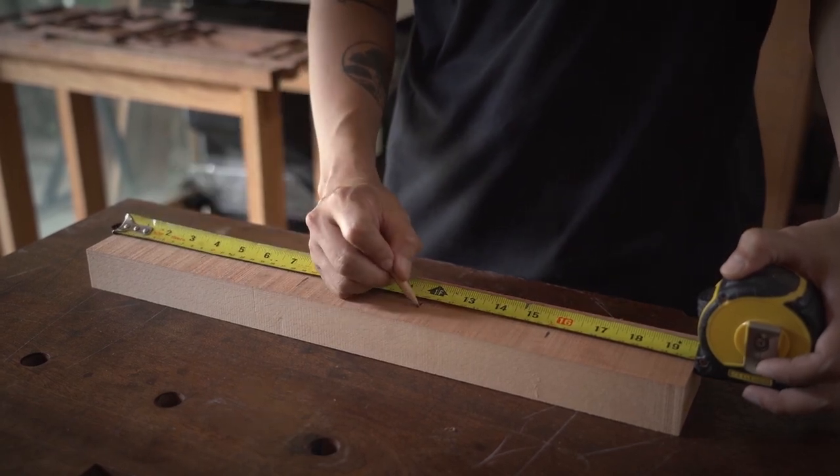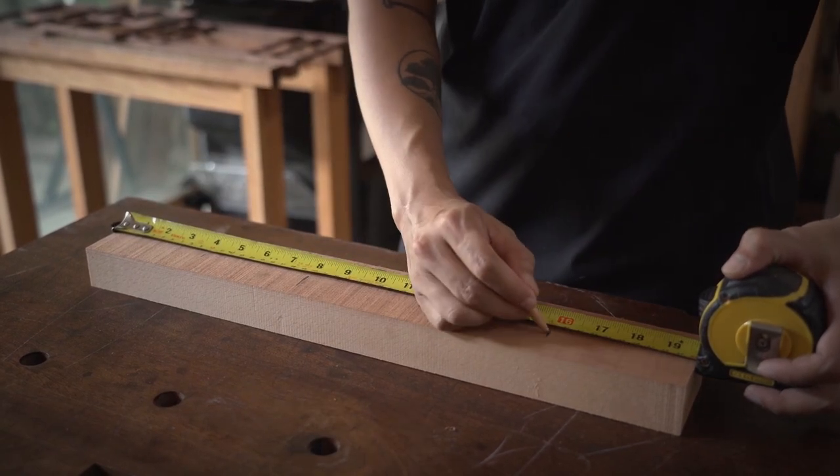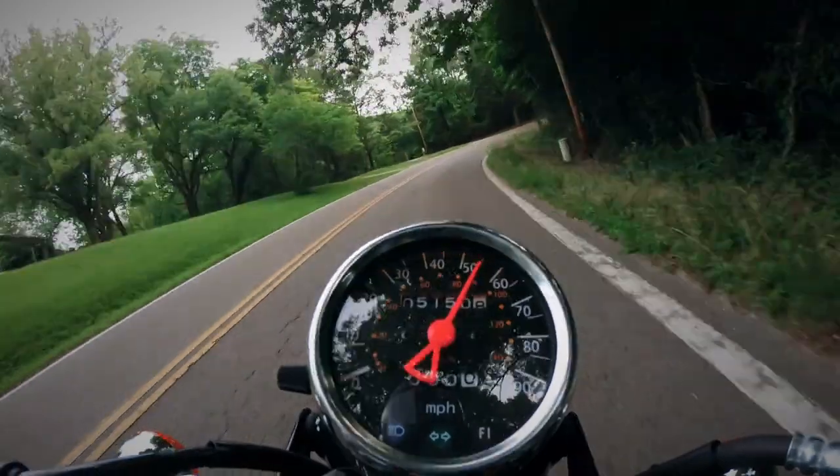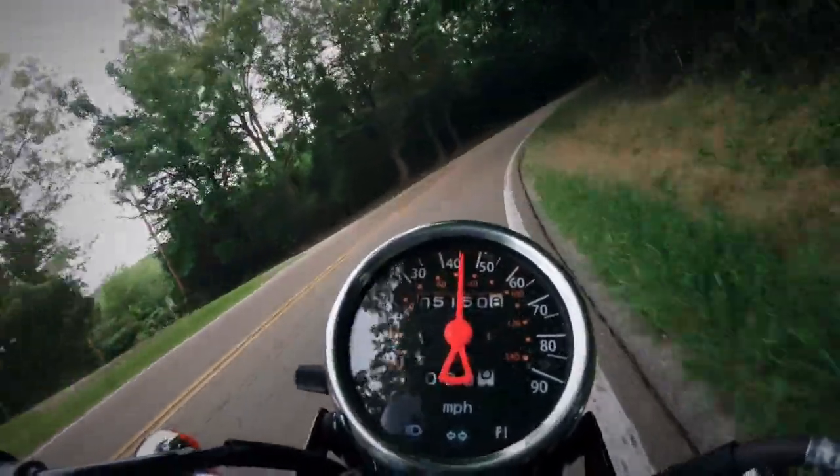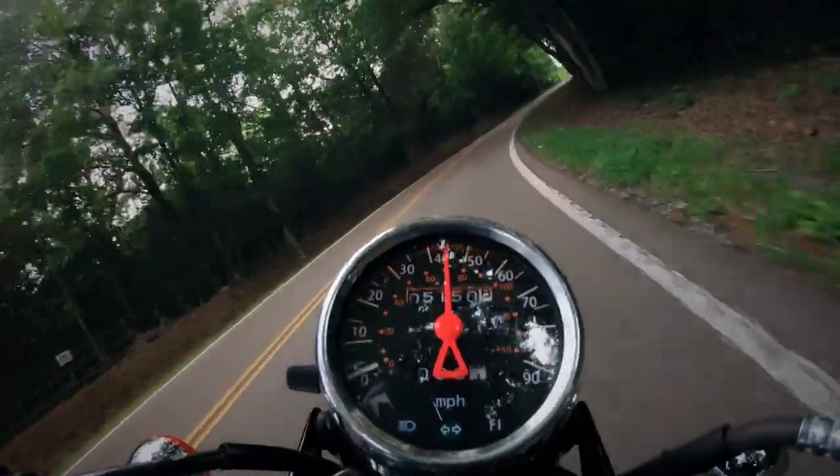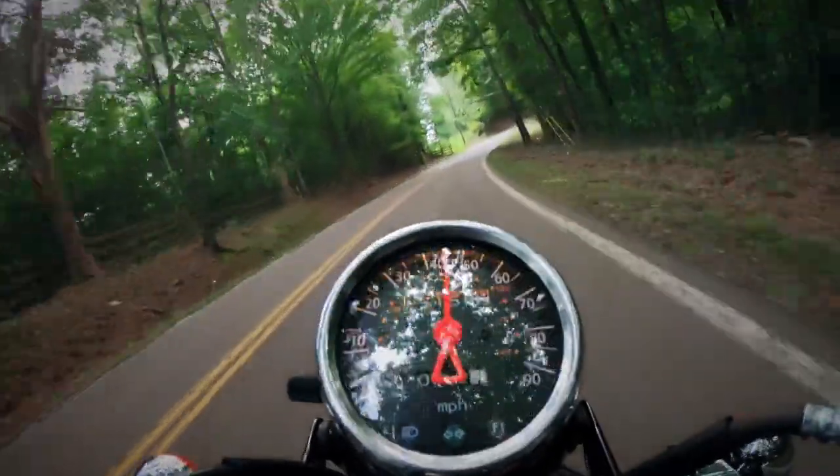we're measuring it relative to some fixed point. You're not going 65 miles an hour down the highway. You're going 65 miles an hour relative to being stopped. If I also move the ground beneath you, that speed value is going to change.